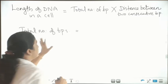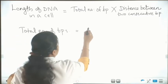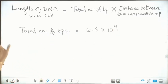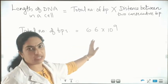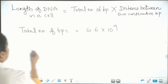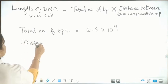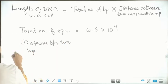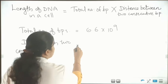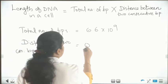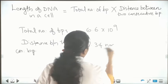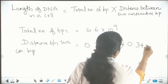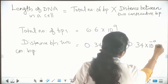First we can see the total number of base pairs in a DNA. That is 6.6 into 10 raised to 9 — that is the total number of base pairs in a DNA, a unique number. And the next one is: what is the distance between two consecutive base pairs? That is also a unique number: 0.34 nanometer, which we can convert to 0.34 into 10 raised to minus 9 meter.